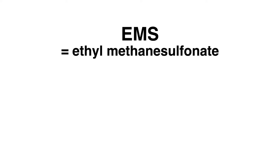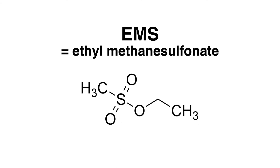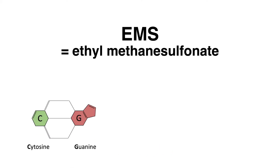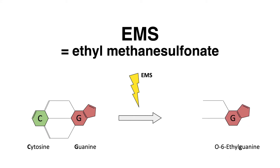What is the role of EMS, which is short for ethyl-methane-sulfonate? Here is the molecular structure of EMS. This substance is highly mutagenic, capable of introducing random mutations into the DNA. Usually cytosine pairs with guanine. Upon EMS treatment, the guanine is alkylated.